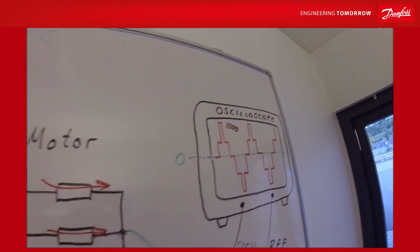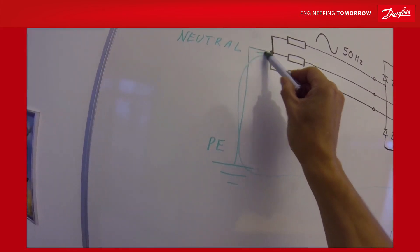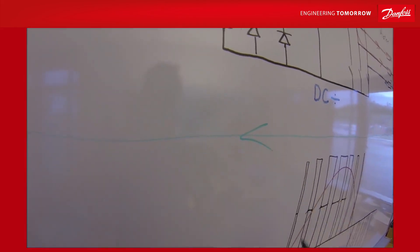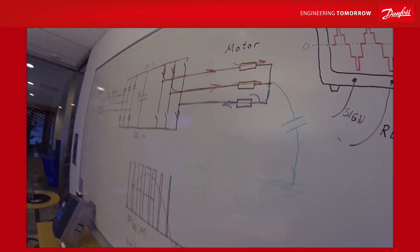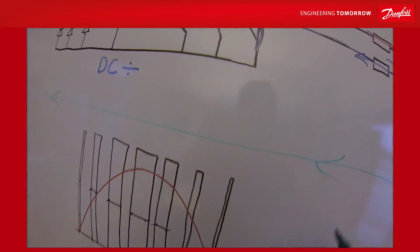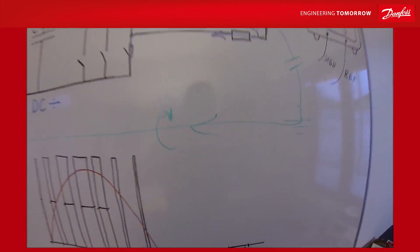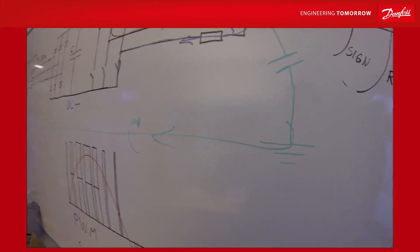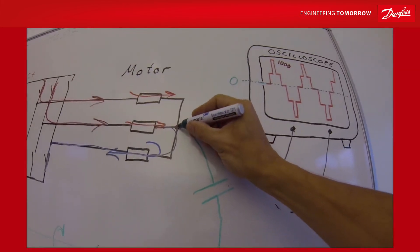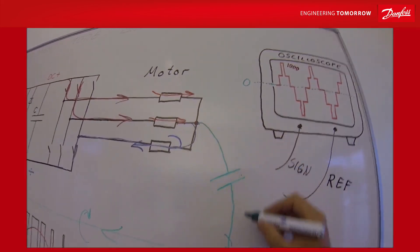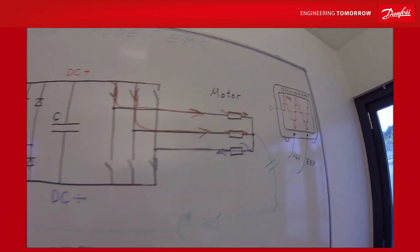This voltage will drive a current back to here. So we got a circulating current going on. A current flowing will create a magnetic field. A magnetic field is radio waves, and this produces EMC.